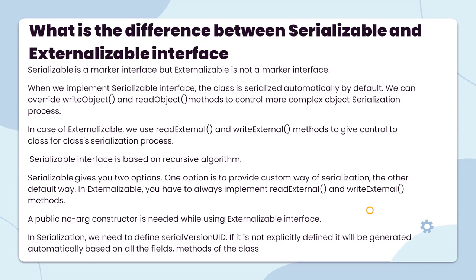We need to define serialVersionUID. If it is not explicitly defined, it will be generated automatically based on all the fields and method signatures.